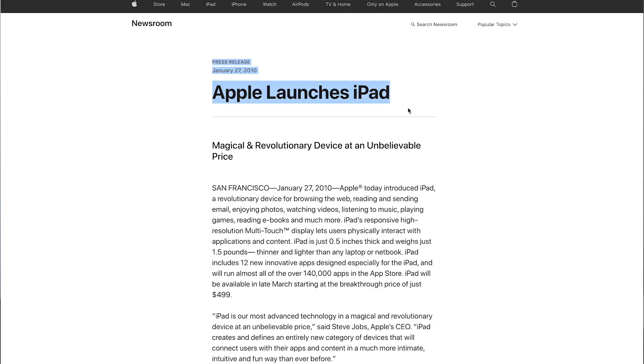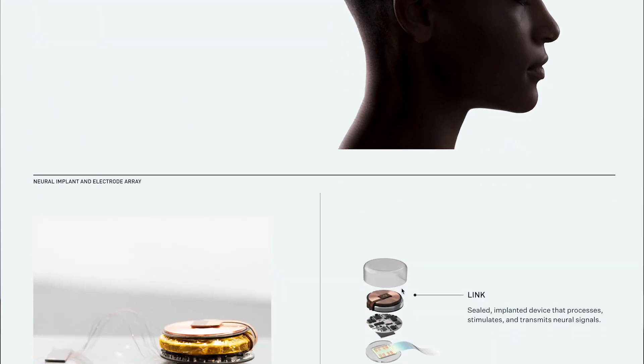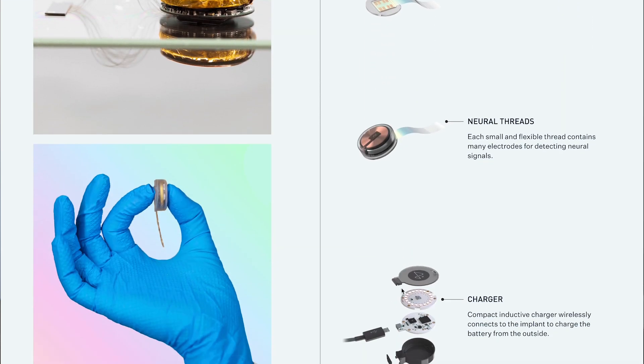In 2010, the first iPad was released — just 12 years ago — and in that time, a whole host of apps have been developed to support communication, and they're being refined as I speak. We also have individuals like Elon Musk, who's developing Neuralink, a technology implanted in the brain to connect to neurons and record their activity. Essentially, you could control a device just by thinking about it. I think that's incredible, and it's something we're going to see even more of in our lifetime.